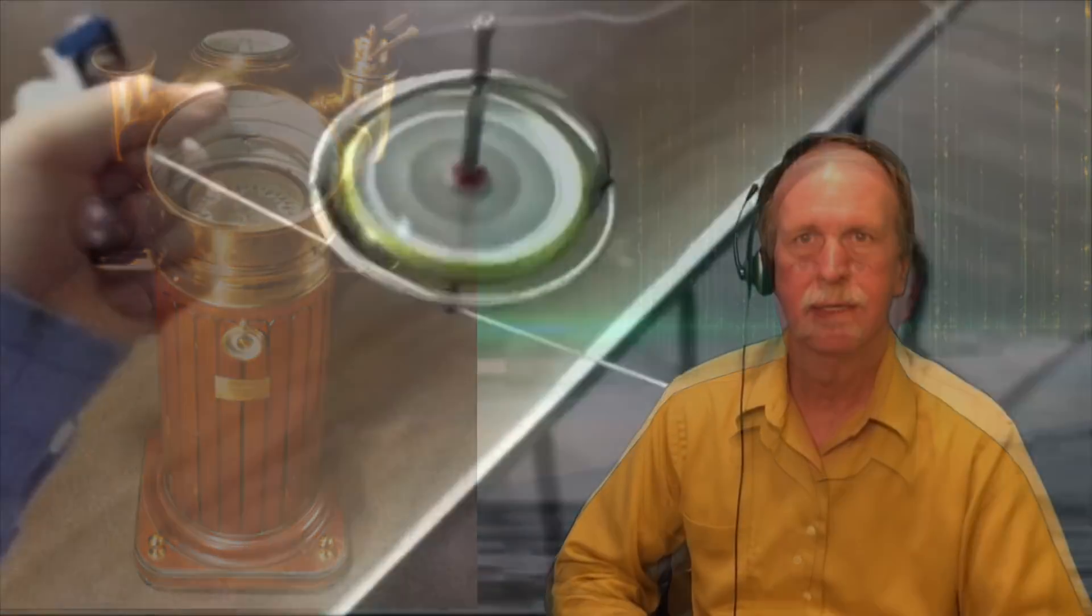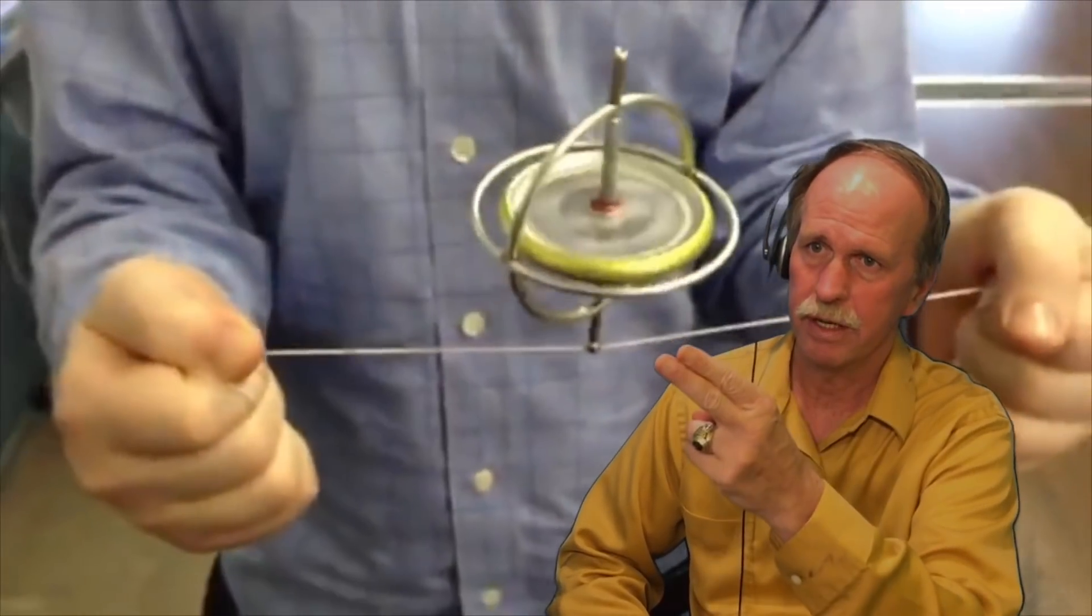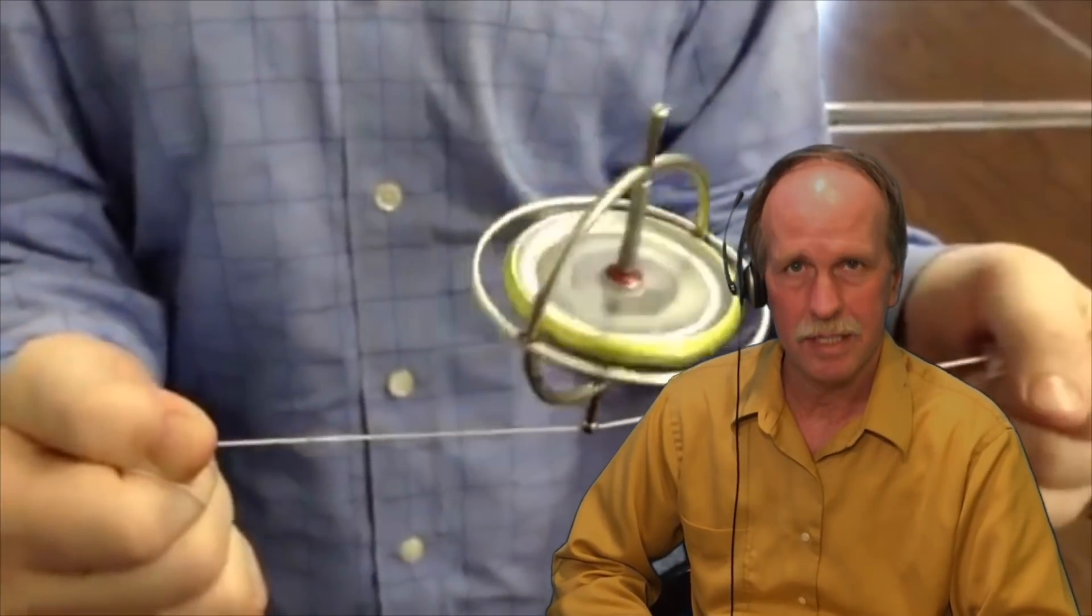This became a much greater problem at the onset of the 20th century, when ships went from being constructed primarily of wood to being constructed primarily of steel. A solution to this problem had to be found. And the answer, as it turns out, was in the procession of the gyroscope. Let's see how they did it.